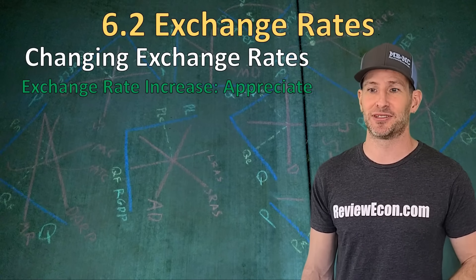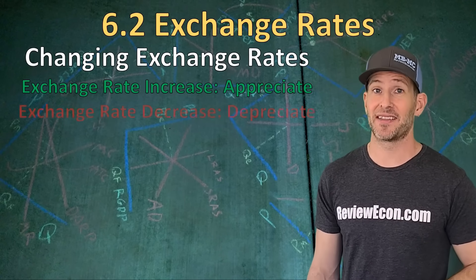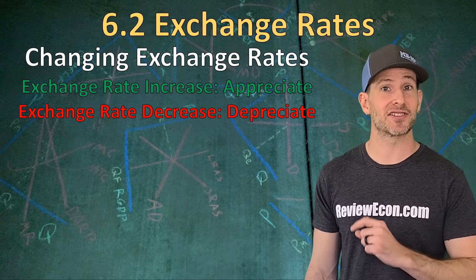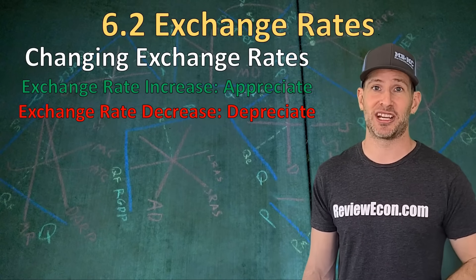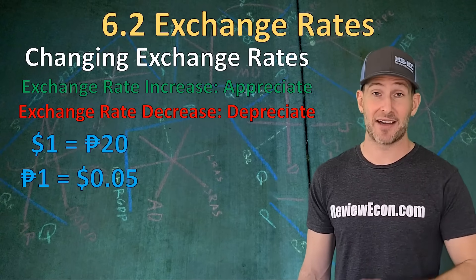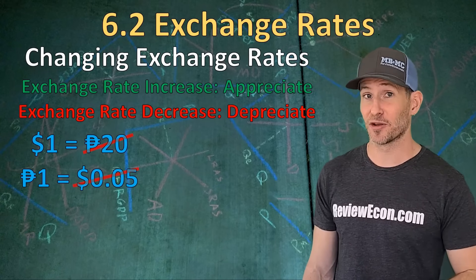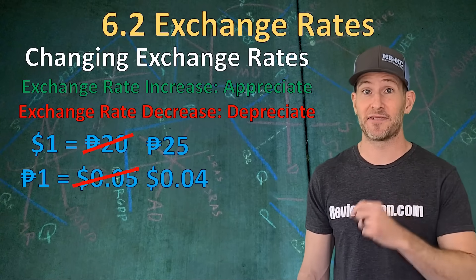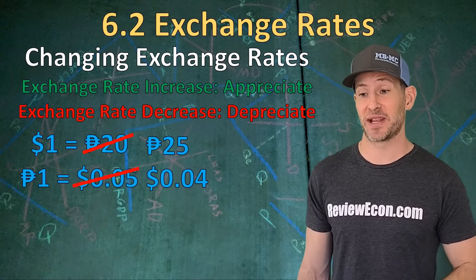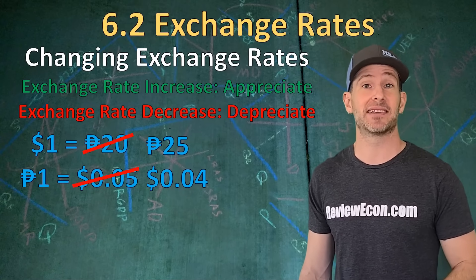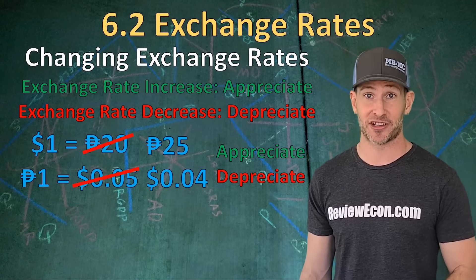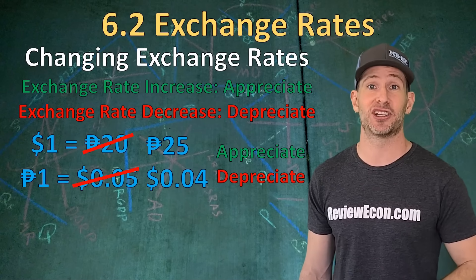If, on the other hand, the exchange rate decreases, then we say that the currency has lost value and it has depreciated. So if the exchange rate changes and we now have one dollar being worth 25 pesos — which is the same as one peso being worth four cents — that means the U.S. dollar has appreciated and the Mexican peso has depreciated.